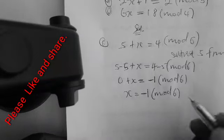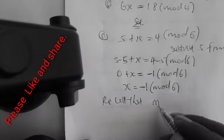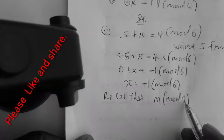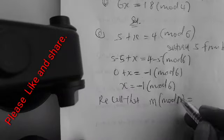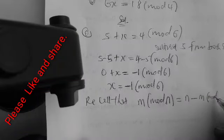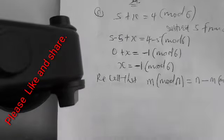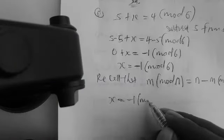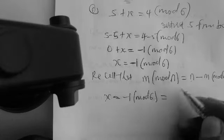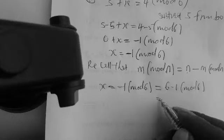From here, we recall that if you have negative m mod n, this equals n minus m mod n. So for x equals minus 1 mod 6, our n is 6, which means x equals 6 minus 1, which is 5 mod 6.